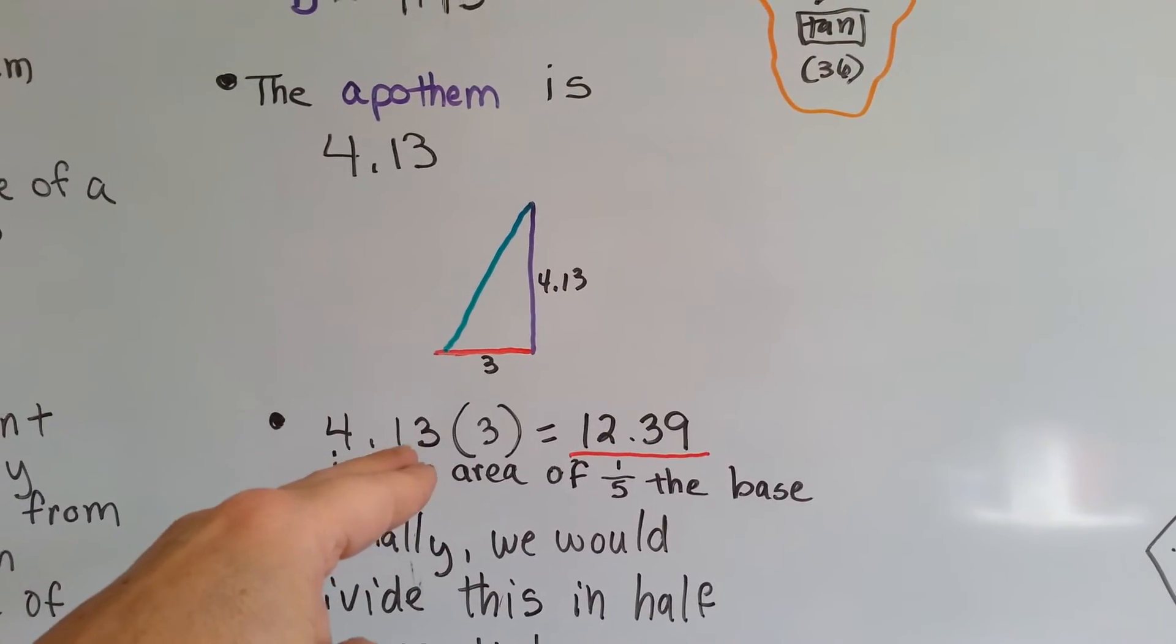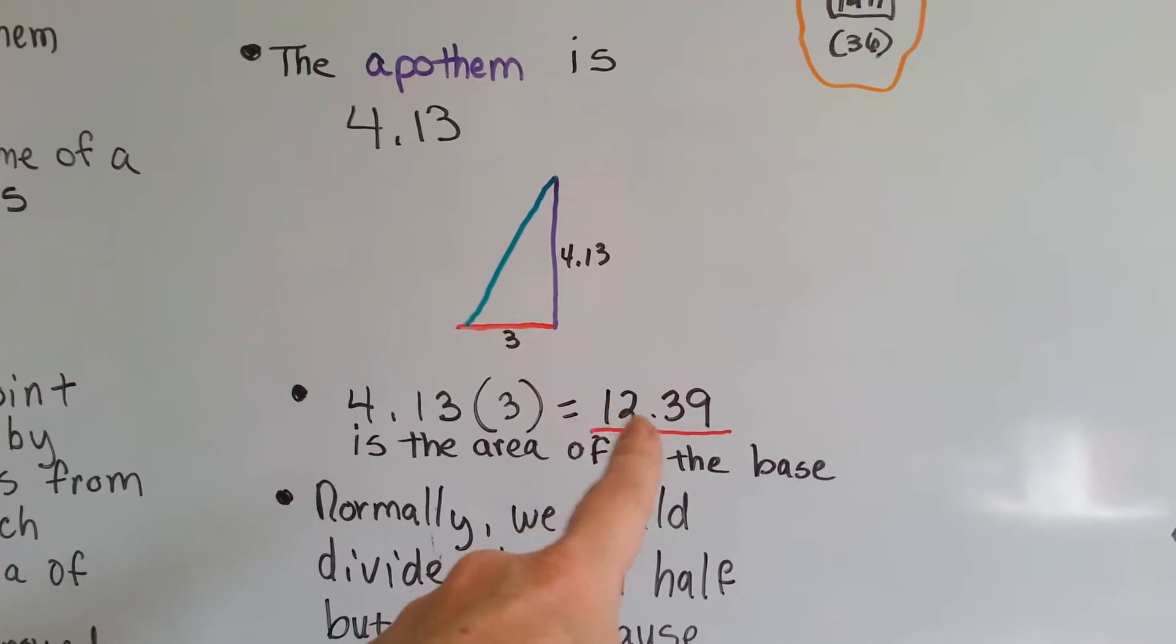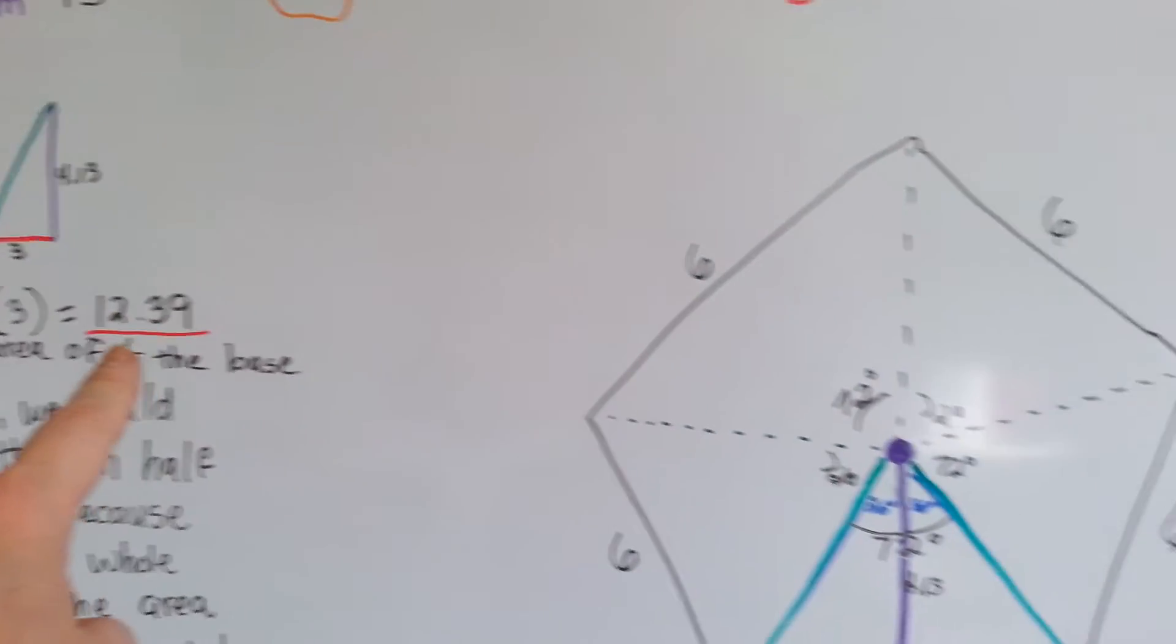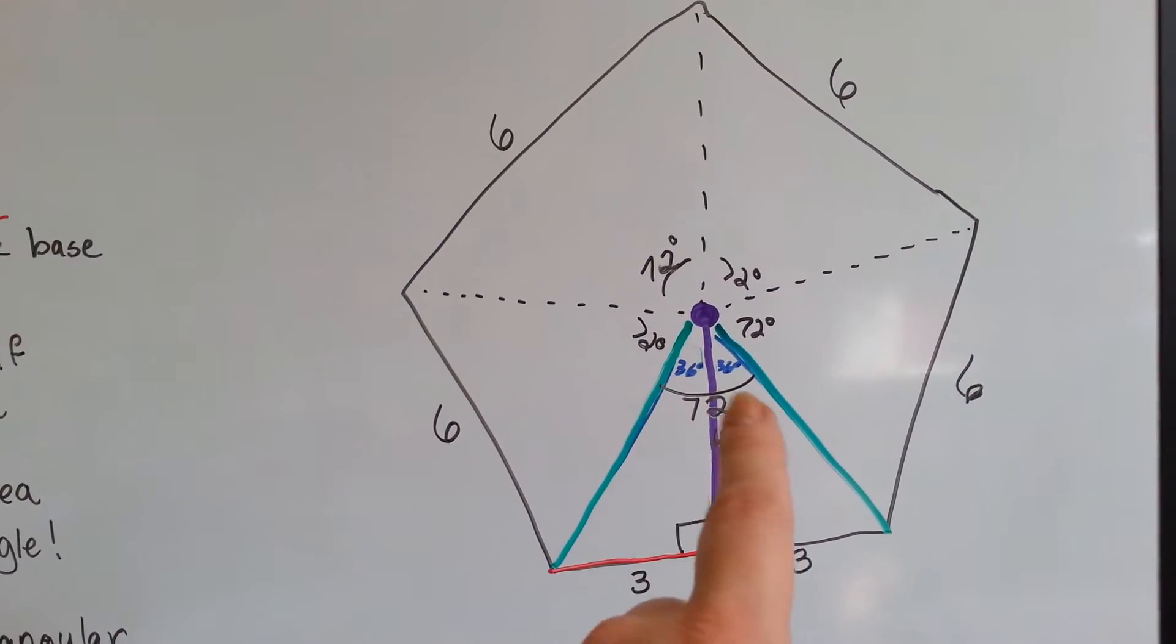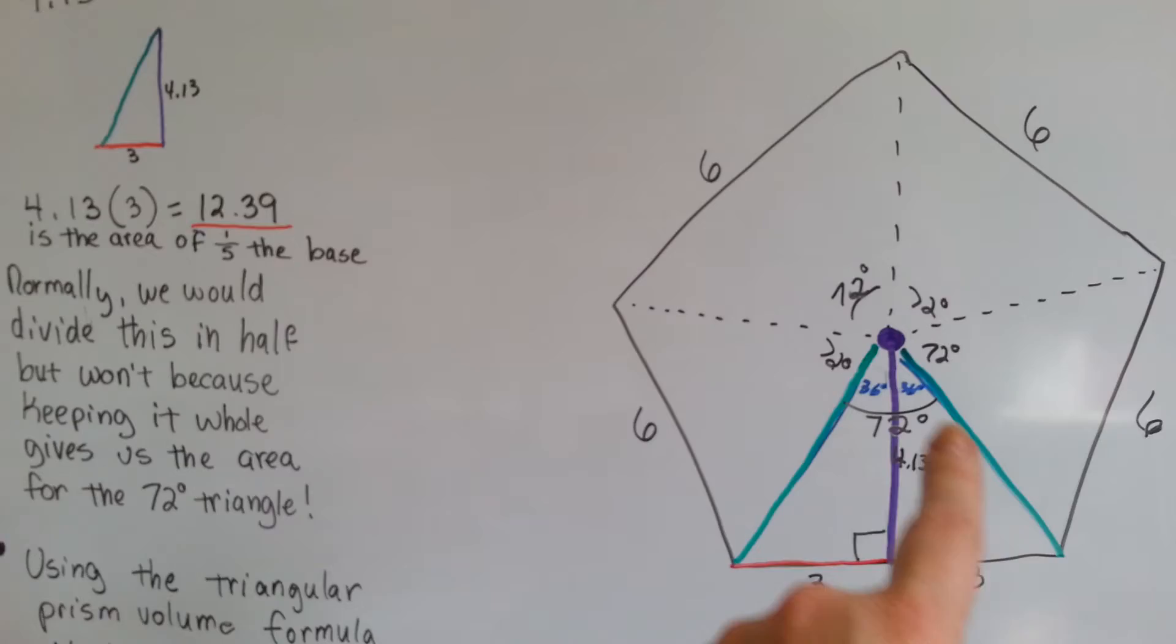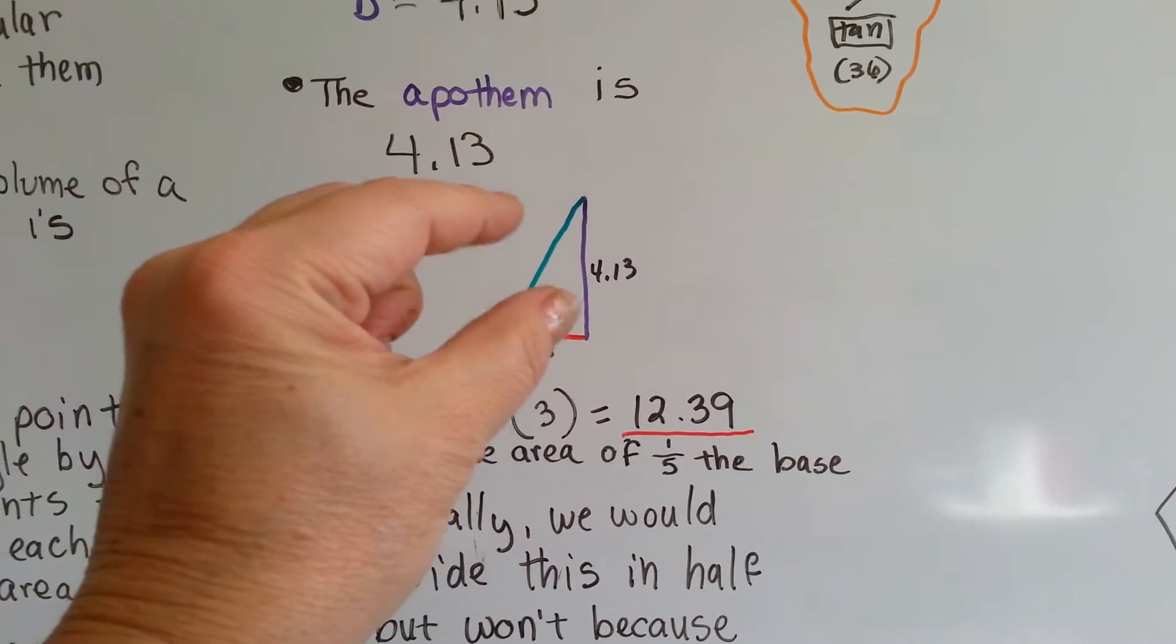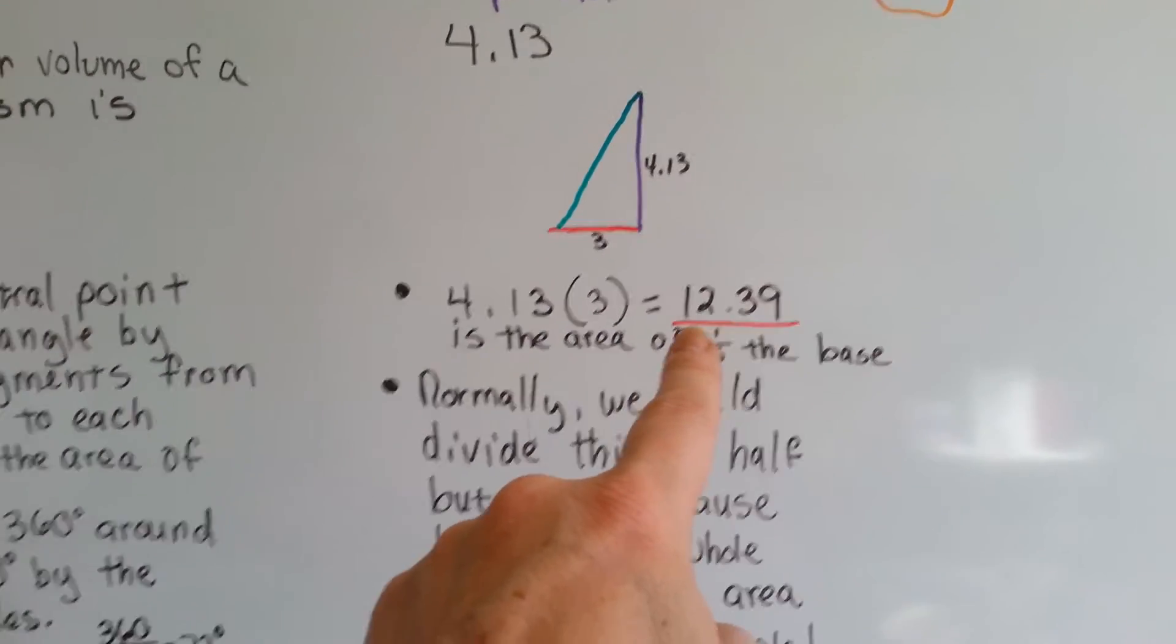But because it's a triangle, we have this overwhelming desire to cut this in half, don't we? But we don't want to. We don't want to cut the 12.39 in half, because we already did. Here's the 36 degree, here's the 36 degree. By keeping it as a whole 12.39, we have this entire triangle, see? Imagine that it was upside down here, put together like this, instead of on this side. So, we want to keep it whole as 12.39.